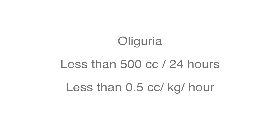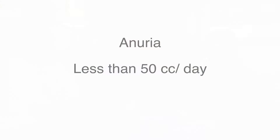Dr. Yoon, how do I know what a normal urine output should be? So let's define oliguria. We define oliguria as less than 500 milliliters per 24 hours, or using the formula 0.5 milliliters per kilogram per hour. In addition, if someone is making less than 50 milliliters per day, then you worry about anuria.